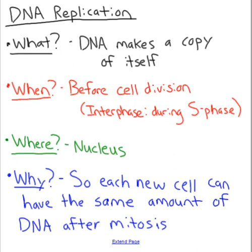Where does this take place? The DNA spends most of its life sitting in a nucleus, so the DNA is replicated in the nucleus. And why do we need to do DNA replication? It is so that each new cell can have the same amount of DNA after mitosis is finished. We have 46 chromosomes — we need to double that so that each new cell can have the right amount of DNA.